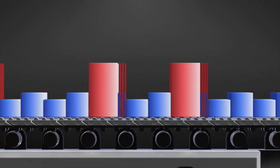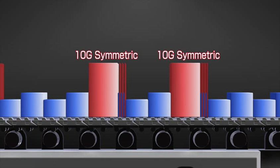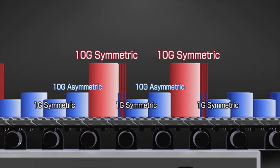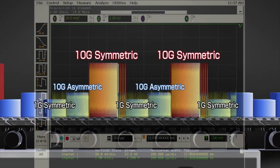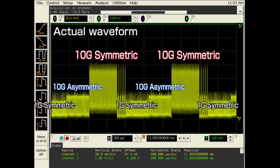Let's observe actual optical signals flowing through the network. We can see that 10G symmetric transmission signals, 10G asymmetric transmission signals, and 1G symmetric transmission signals are all precisely controlled.